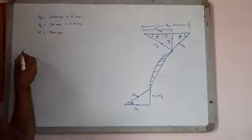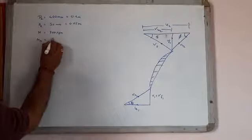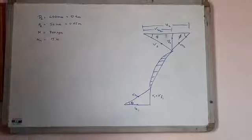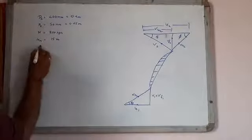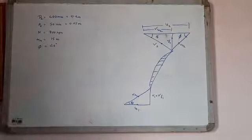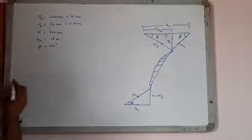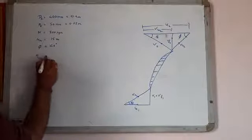Head HM is 15 meter. Vane angle at outlet phi equal to 40 degree. Manometric efficiency is given 75%, 0.75.